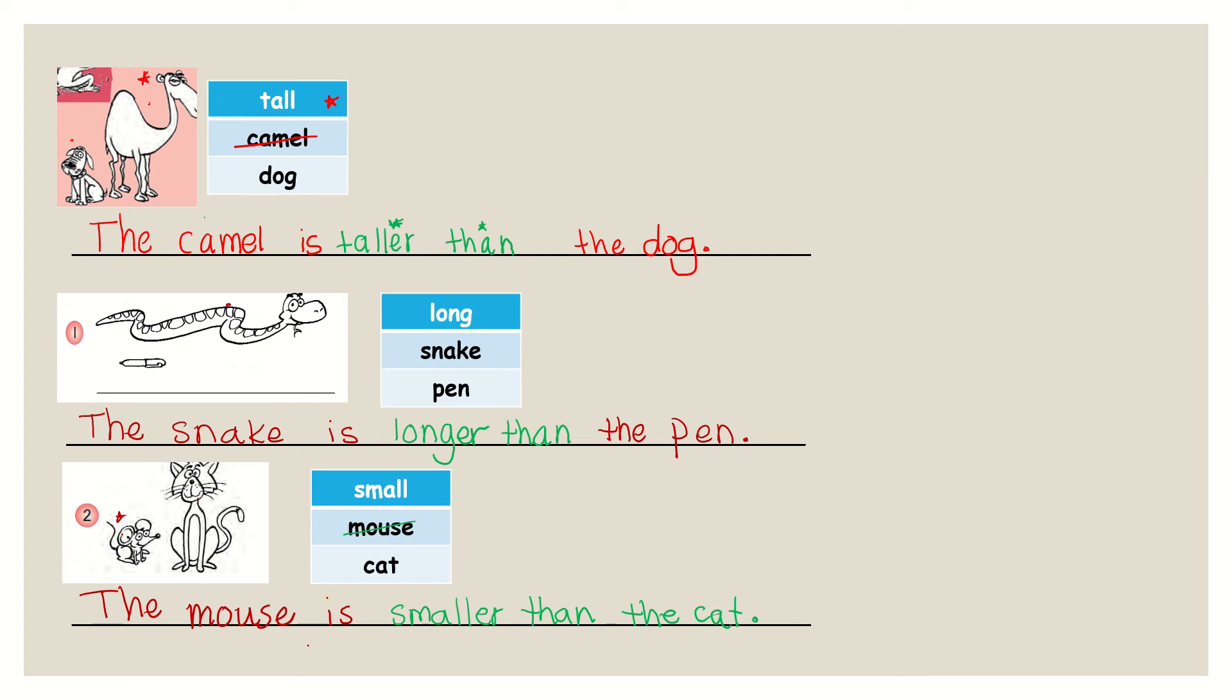The mouse is smaller than the cat. Very easy, right? Very easy. We just add -er and add than. Very easy.